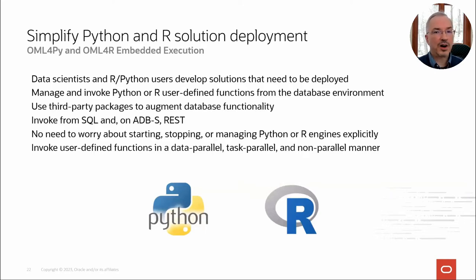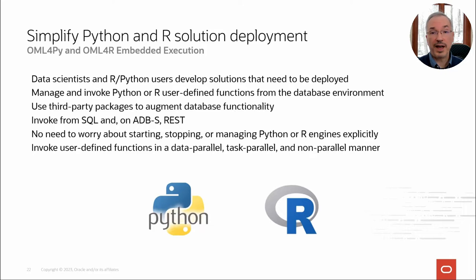Let's talk about deploying R and Python-based solutions through the database environment. Deploying solutions using R and Python can introduce challenges including separately managing R and Python engines, as well as scalability and performance concerns. OML for R and OML for Py support native R and Python interfaces to in-database algorithms, but they also support embedded execution to deploy R and Python code using database-spawned and controlled engines. This code may also use third-party packages from the R and Python ecosystems. Embedded execution enables invoking user-defined R and Python functions from SQL, and on Autonomous Database also using a REST API.